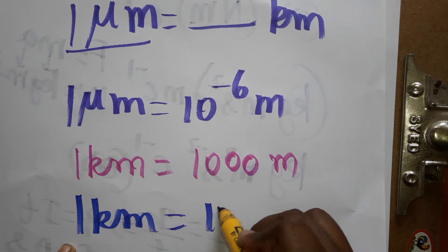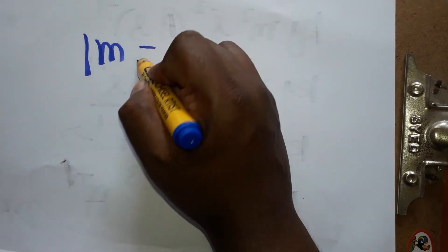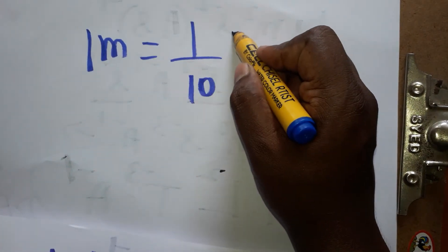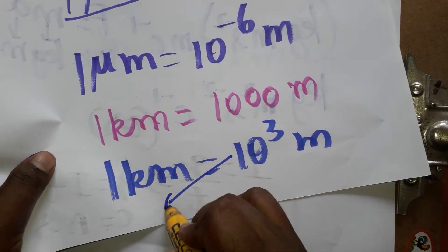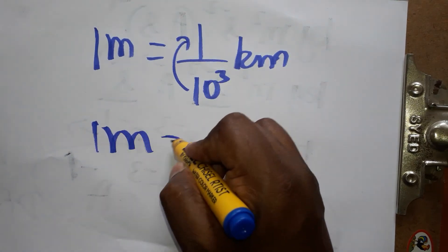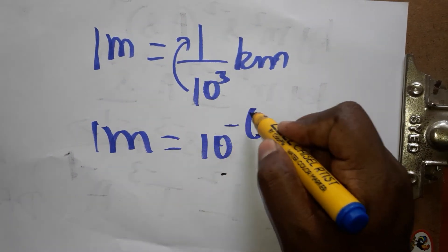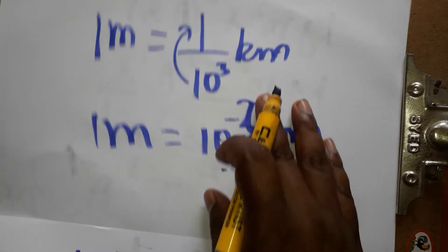So one meter is equal to how many kilometers? One meter is equal to one divided by 10 power three kilometer. If we take this from denominator to numerator, one meter is equal to 10 power minus 3 kilometer. Now our conversion...